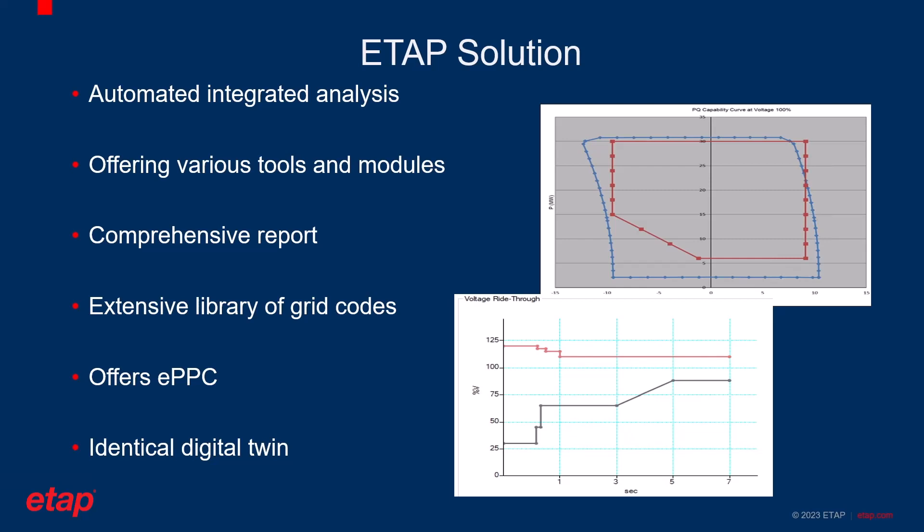Furthermore, ETAP includes an extensive library of grid codes that prevents all the unnecessary manual efforts the user needs to make toward interpretation of a grid code requirement. They can simply go through the ETAP library, find the corresponding grid code requirement, choose it, do the analysis based on that, and find their final results to verify their power plant capability.